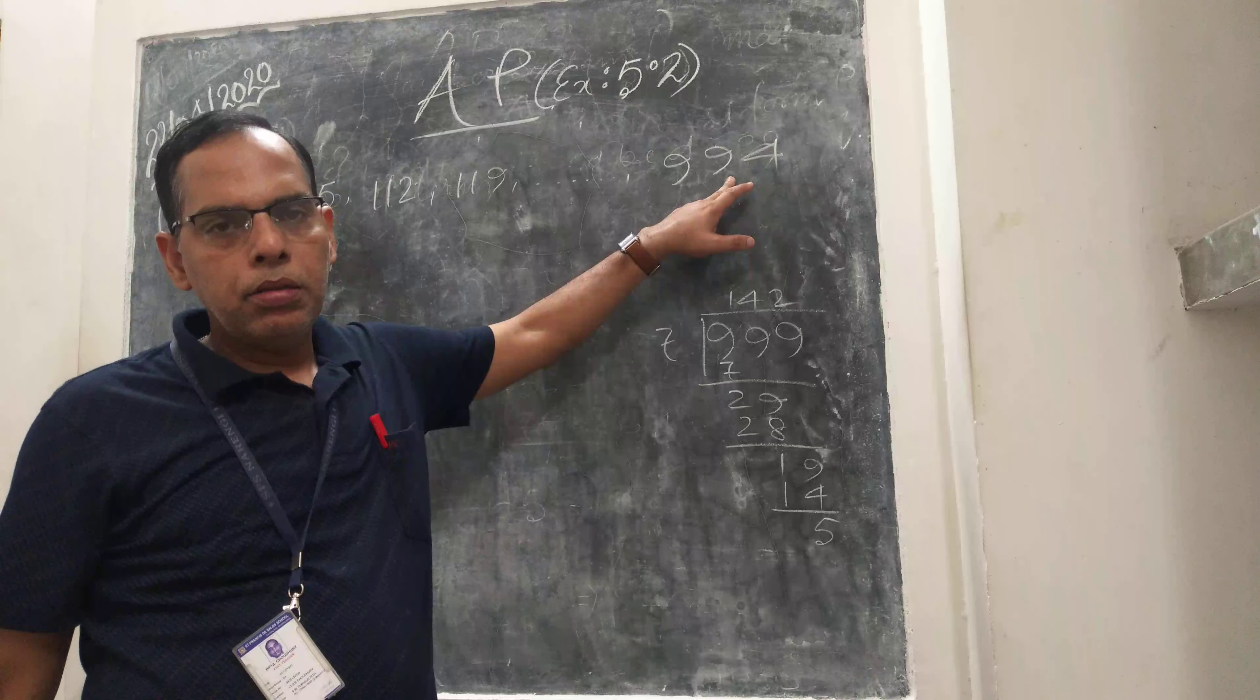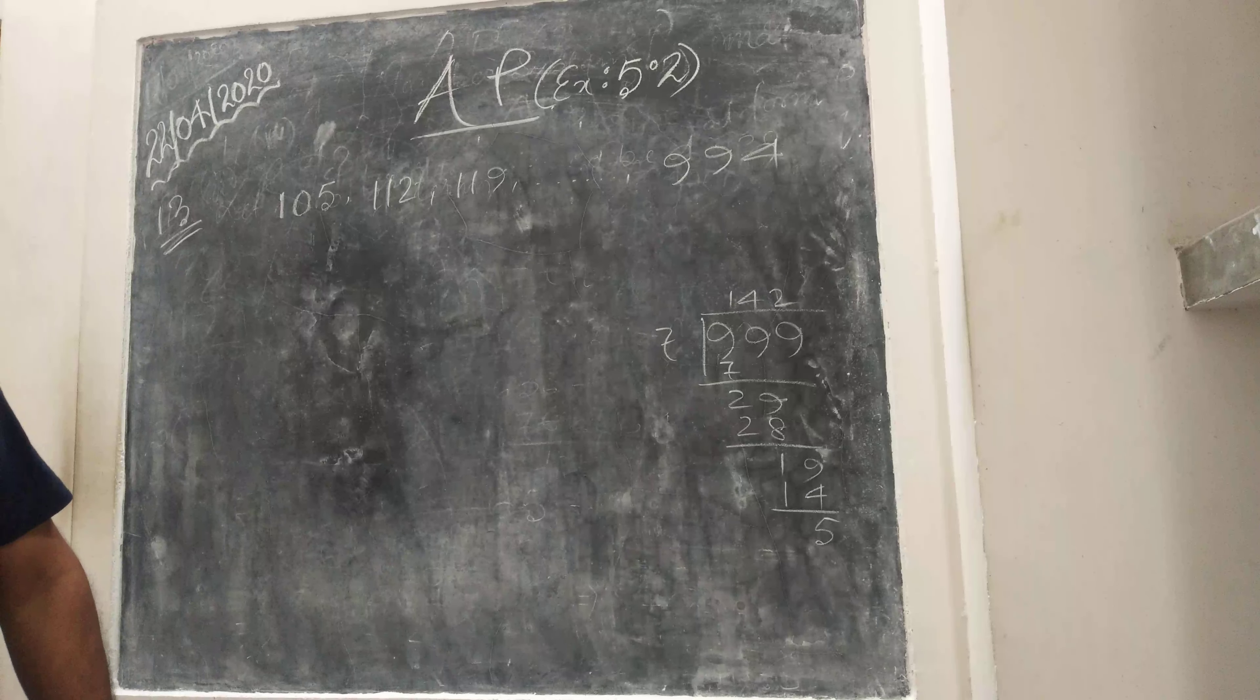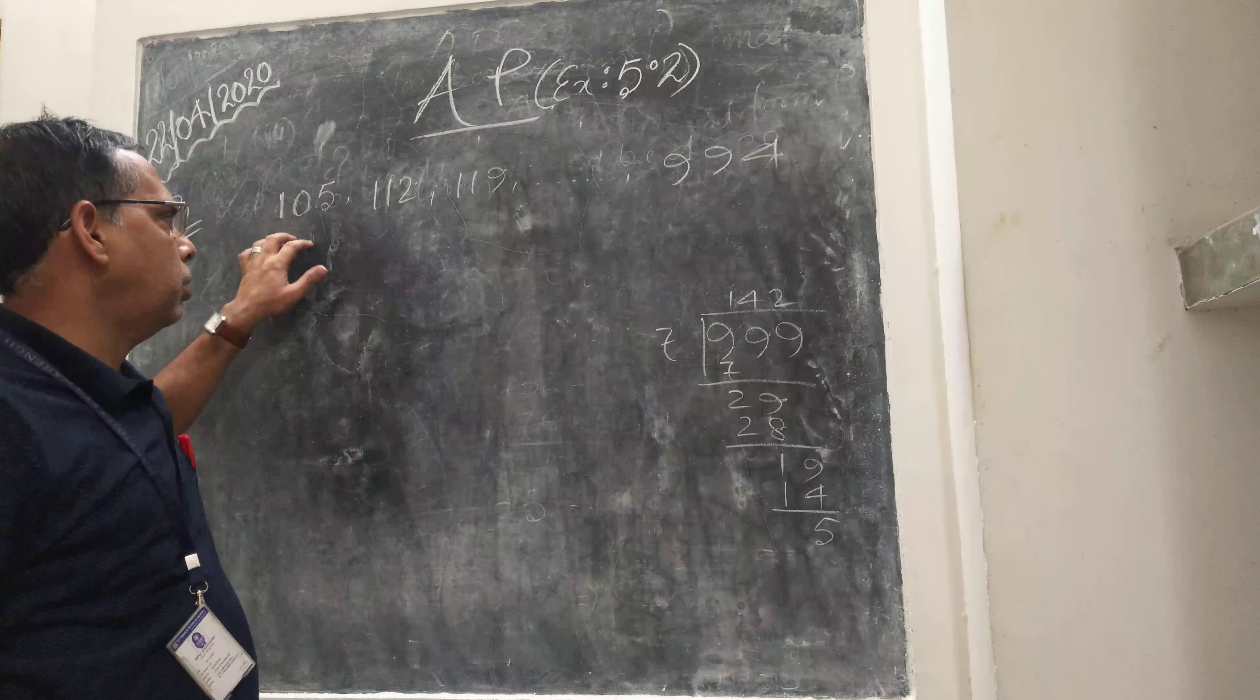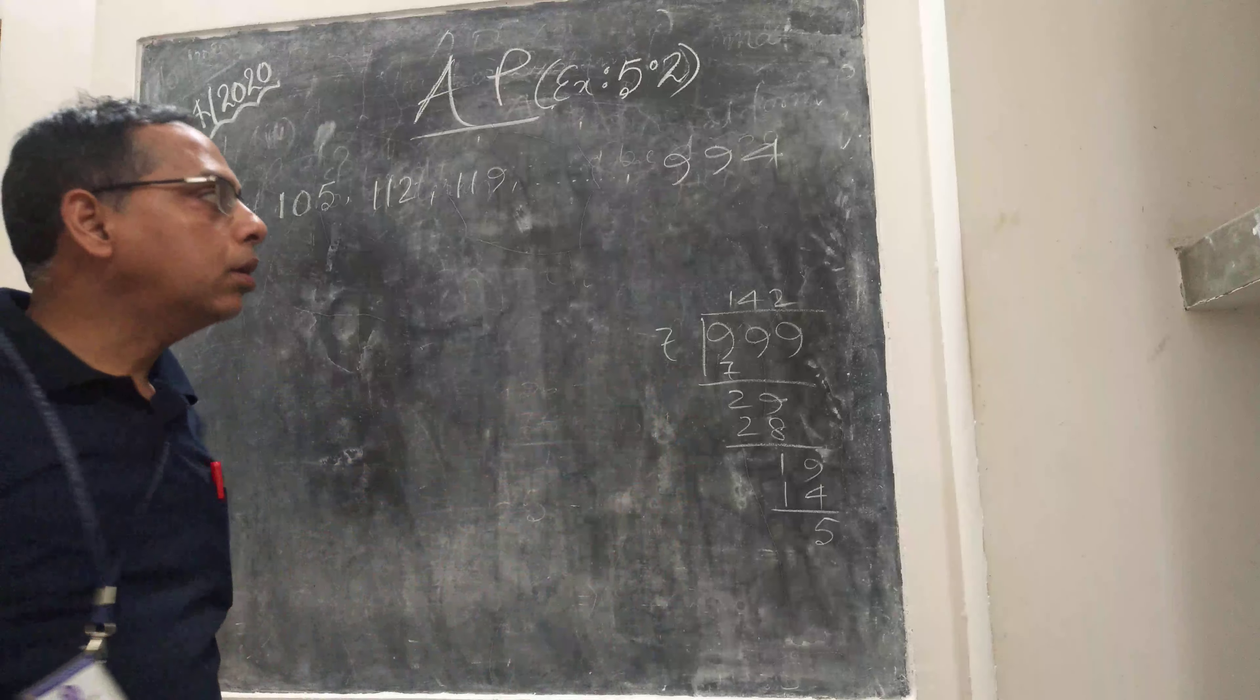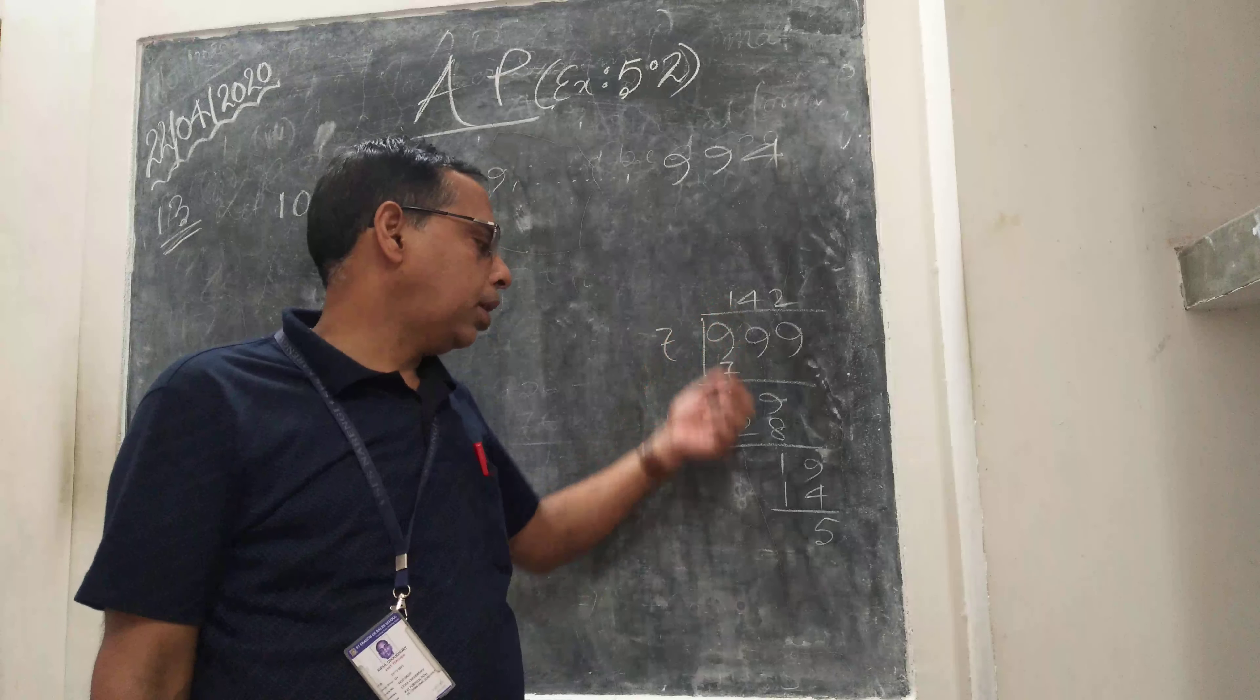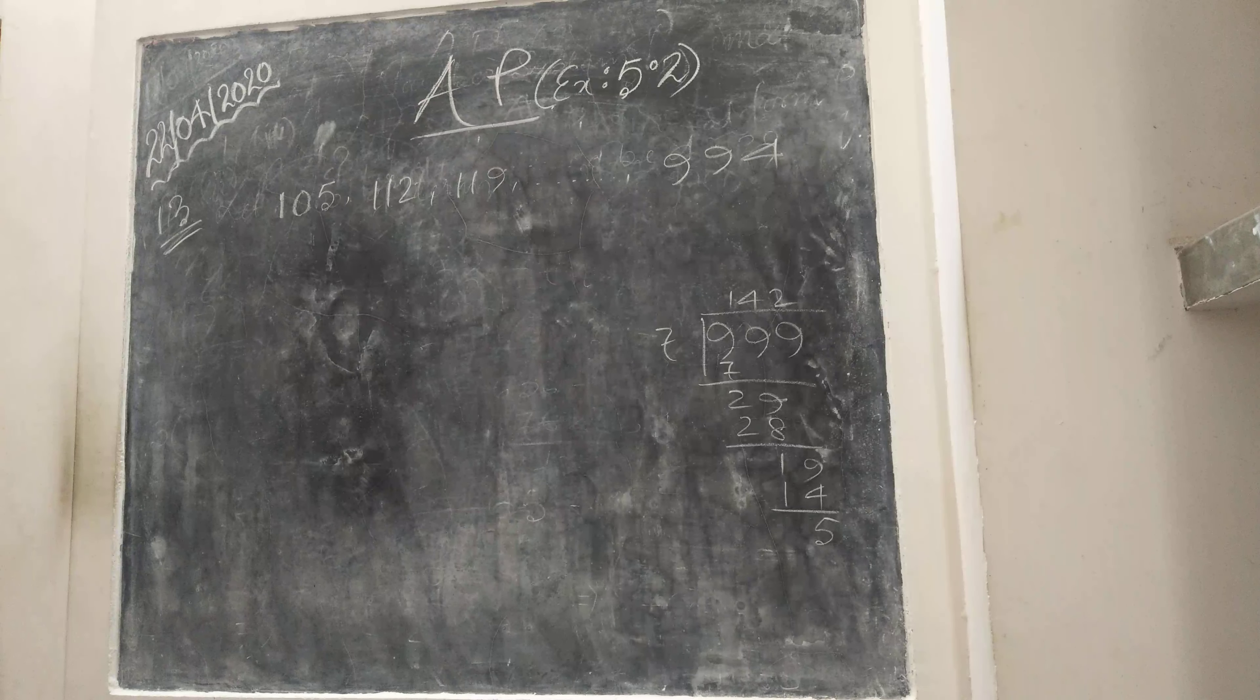Just subtract this 5 from 999 and you will get the number divisible by 7. Then to find out the number of terms, it is same as question number 10 and question number 5. Same as that one. So only thing is you have to start with 105, then 112, then 119.